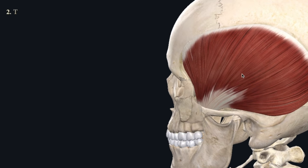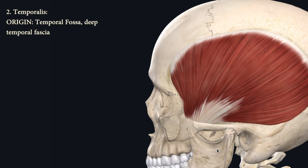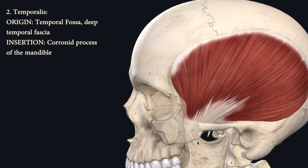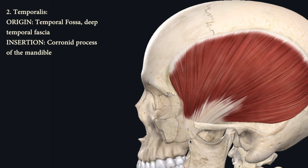Number two is the temporalis muscle, which originates from the temporal fossa and deep temporal fascia, and inserts into the coronoid process of the mandible. One way I remember its insertion: I think of the temporalis as the coroner — the coroner inserting into the coronoid process. It doesn't quite make sense, but thinking of the temporalis as the coroner means you won't forget it inserts into the coronoid process.